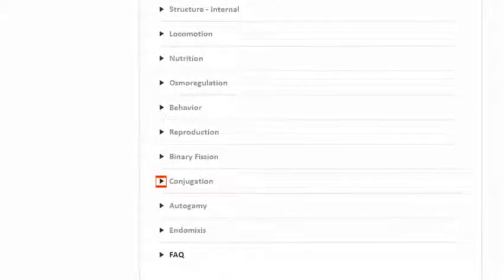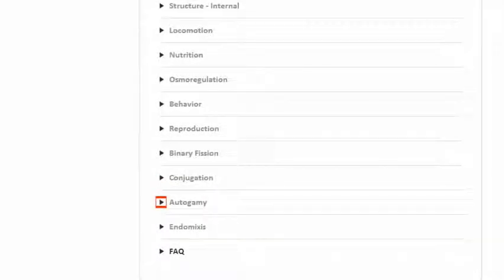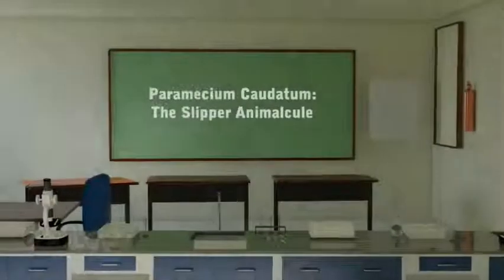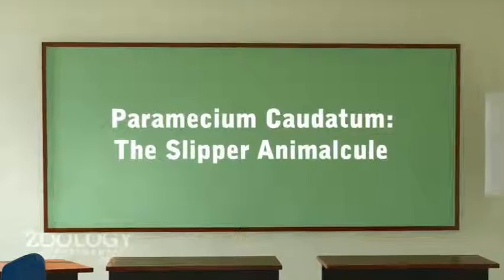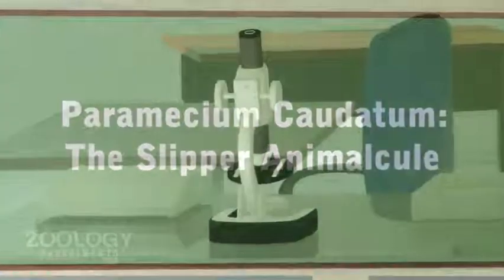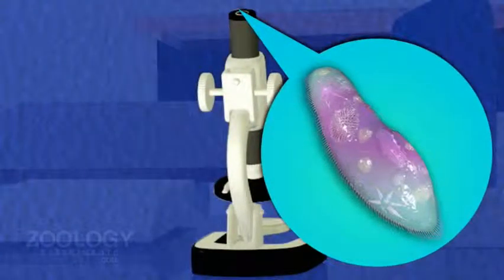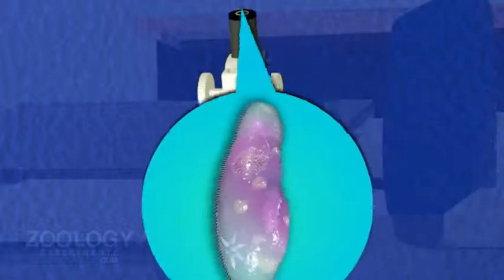In this video we will be discussing and learning about Paramecium caudatum. Paramecium, which moves with the help of cilia, is called a ciliate.